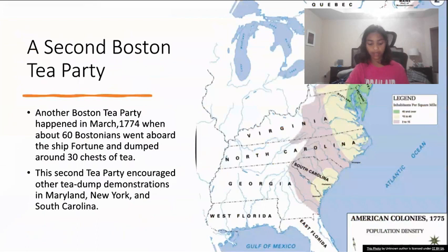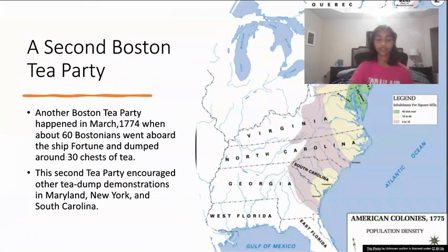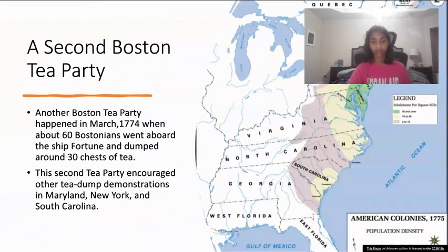A second tea dump happened in 1774, where 60 people dumped 30 chests of tea. This encouraged other tea dumping in Maryland, New York, and South Carolina.